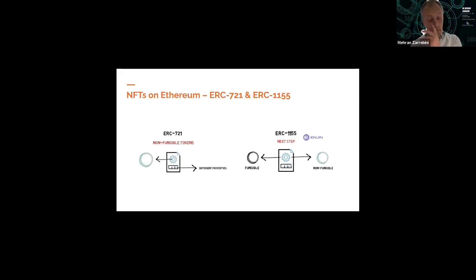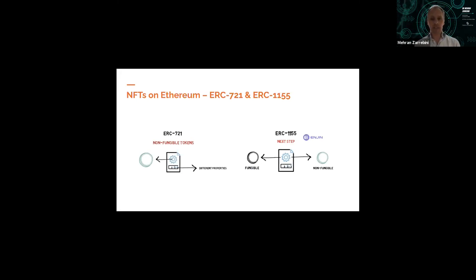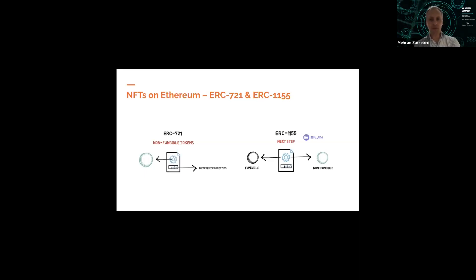Before we get into both of those, let's quickly recap what ERC20 is, as it'd be useful for comparison. It's a well-known standard for creating tokens on the Ethereum blockchain. Some examples include stablecoins such as USDT or USDC, and DeFi tokens such as Lend and Uni. The ERC20 standard allows for creating fungible tokens.